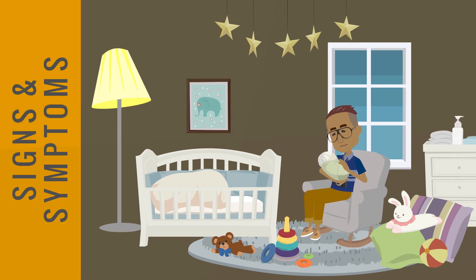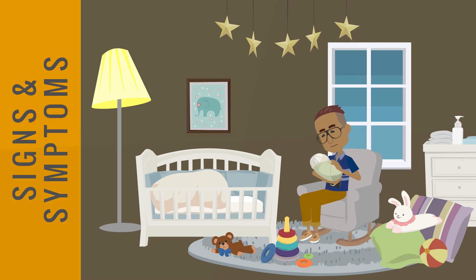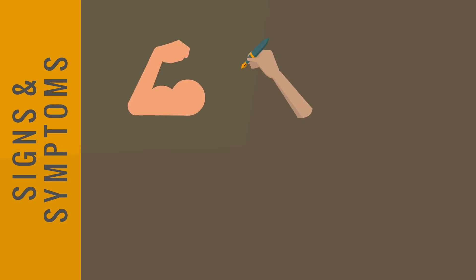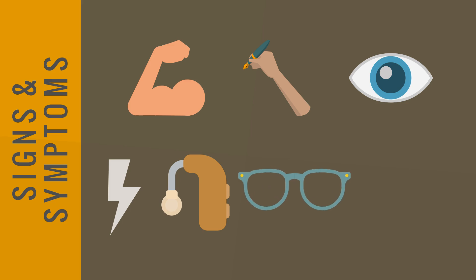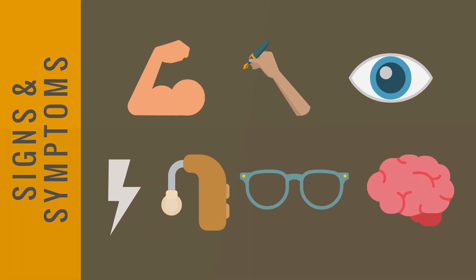The manifestation of Tay-Sachs disease depends on the form. Infantile Tay-Sachs disease is the most common, so we'll highlight symptoms that often appear with that form. Generally, each of the three forms share common symptoms. It's crucial to note that the severity of symptoms can vary, but the disorder typically leads to significant neurological deterioration.